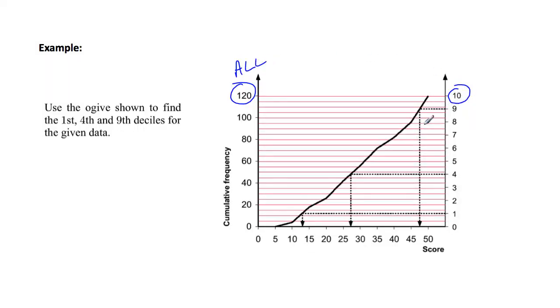So 120 is all the scores and therefore it's given a decile of 10 which means that 100% of the scores are there.